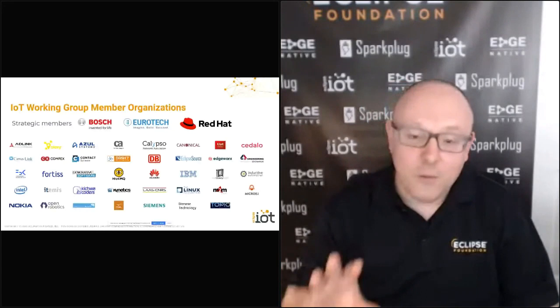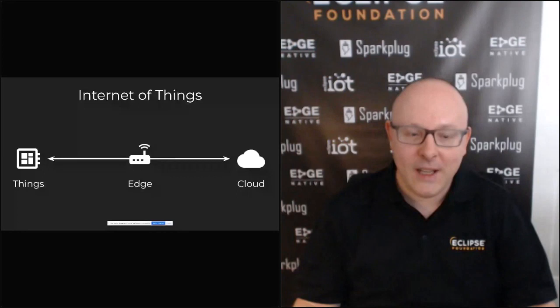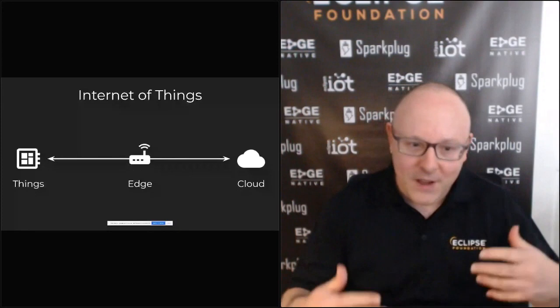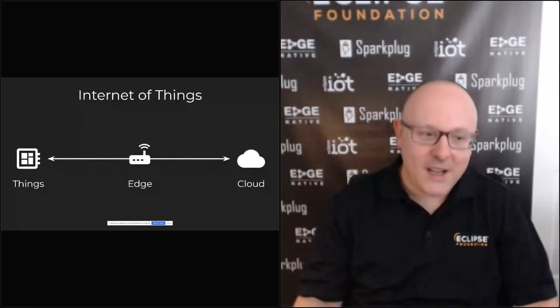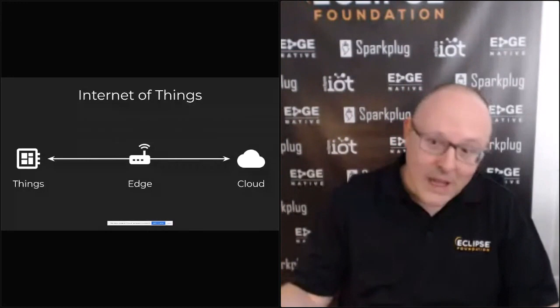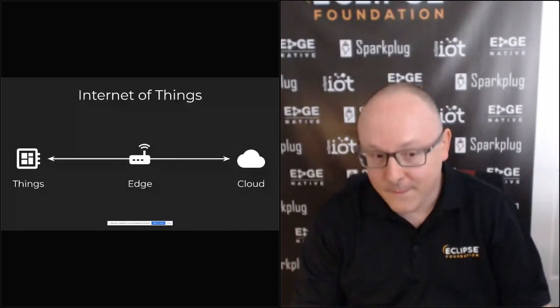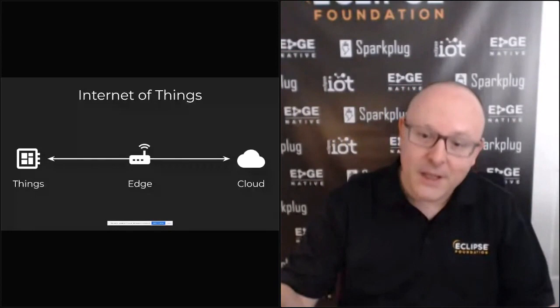What we're trying to achieve is a common vision, inspired by our three strategic members: Bosch, Eurotech, and Red Hat. When we consider the Internet of Things, there are essentially three categories to think about. First are the connected things — connected objects with microcontroller boards and that kind of stuff. Then there's the cloud. And in the middle, there is edge computing, which is relevant to a lot of IoT use cases. My aim in this presentation is to survey each of those three categories and let you know about the main projects we have in each.